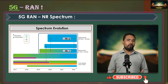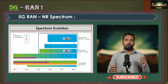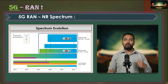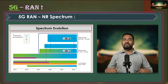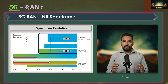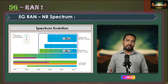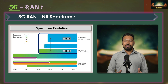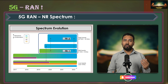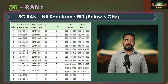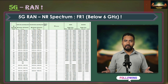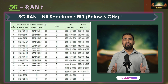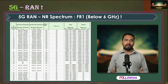Spectrum plays an important role in wireless communication. First we will understand what innovations 5G brings in terms of spectrum utilization. 5G NR spectrum options are divided into two frequency ranges: FR1 or Frequency Range 1, and FR2 or Frequency Range 2. Frequency Range 1 includes bands below 6 GHz with carrier bandwidth from 5 MHz to 100 MHz.